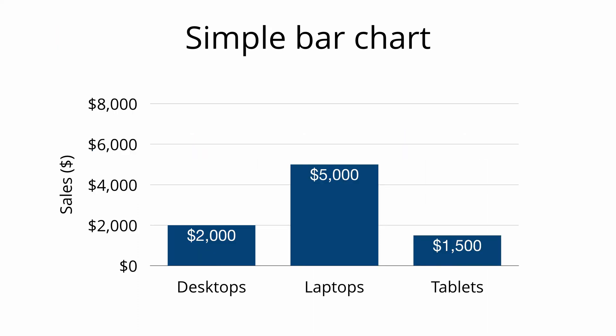We'll start off with the most basic chart, a simple bar chart. When interpreting charts, always talk through what the axes are first. The x-axis represents different products — desktops, laptops, and tablets. The y-axis represents sales in dollars. The height of each bar represents the amount of sales for each product. We can conclude that laptops have the highest sales at $5,000 and tablets have the lowest sales at $1,500.